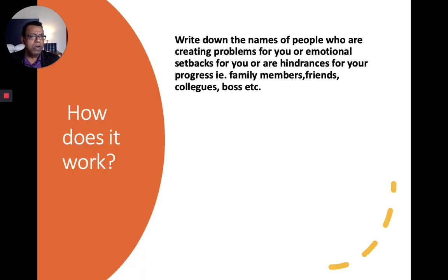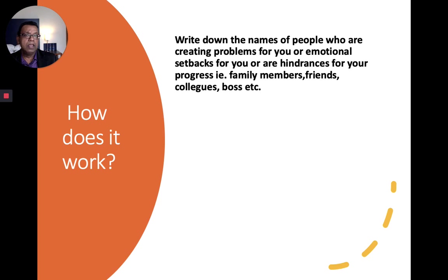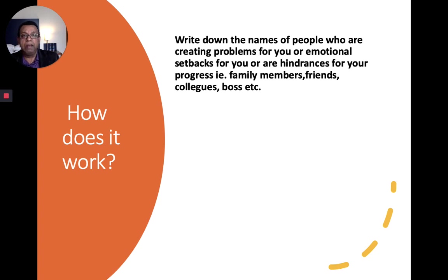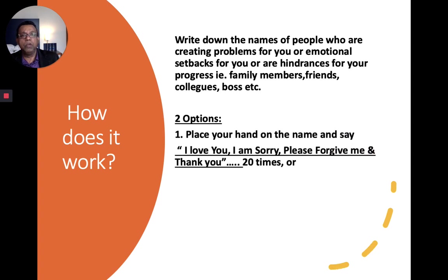One way to start is to write down the names of people who are giving you problems — family members, friends, colleagues, bosses, business partners, clients — write them on a piece of paper using a pen. Then put your hand on the names and say 'I love you, I'm sorry, thank you' about 20 times — you can do as many times as you want. Whether it's your manager, your spouse, or a sibling, write the name, put your hand on top, and say those words.